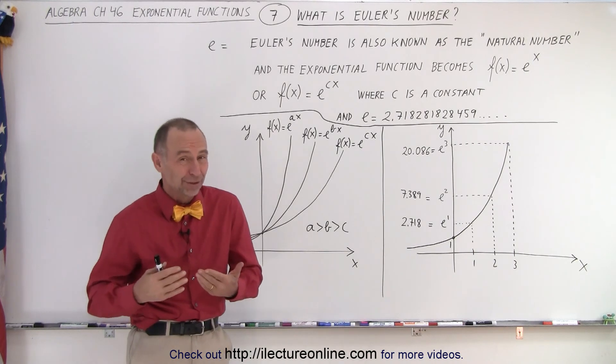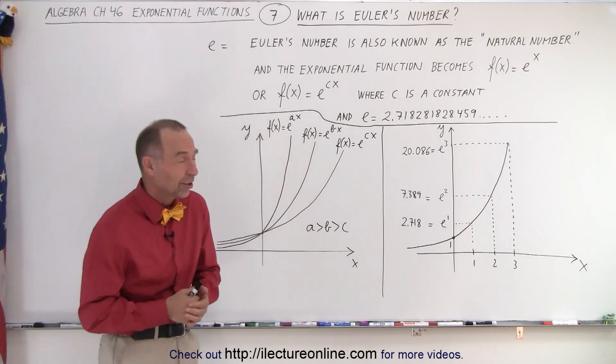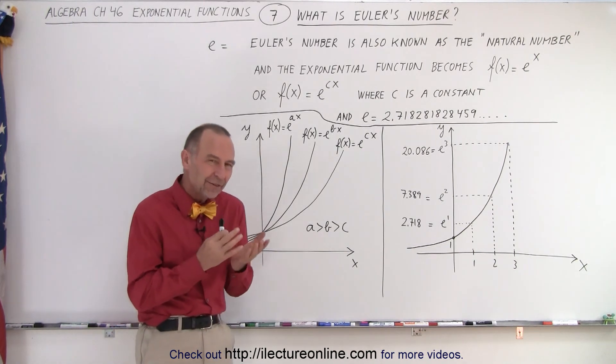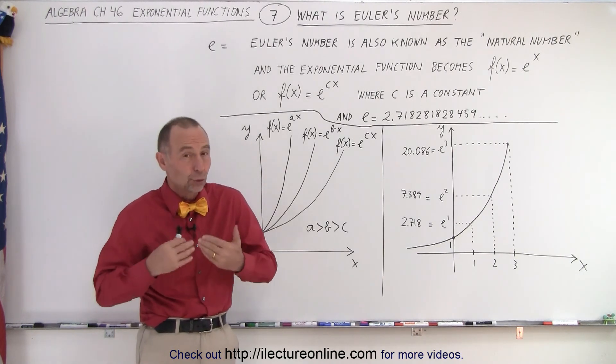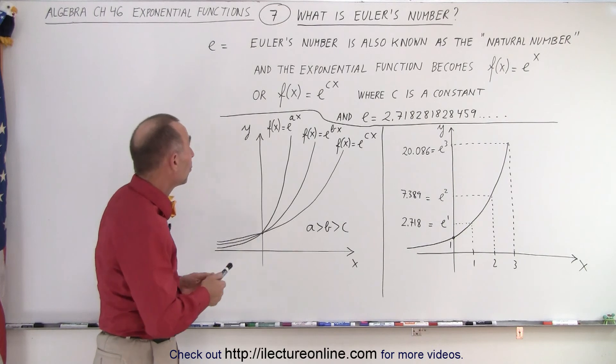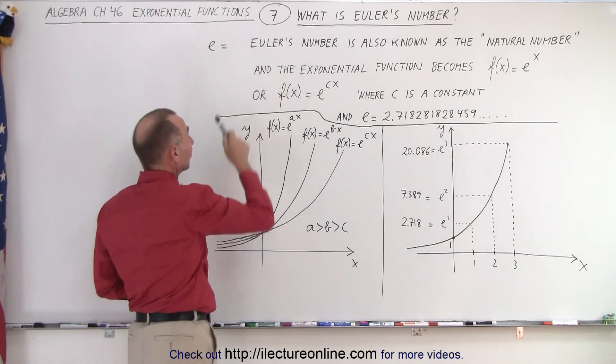Well, it's the natural number. That's also the other name that we call it. Because everything grows exponentially according to that natural number, according to Euler's number. So, we use the letter E to identify Euler's number.